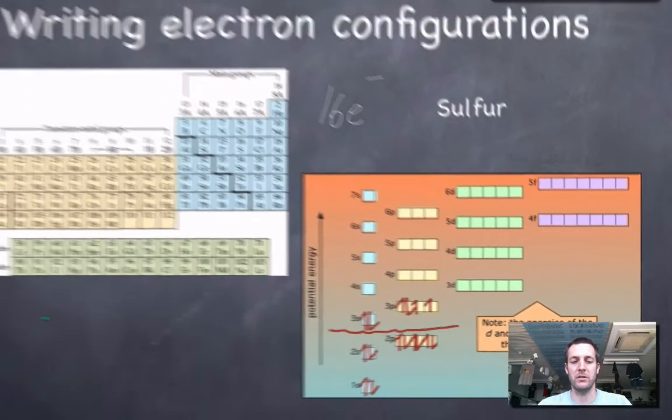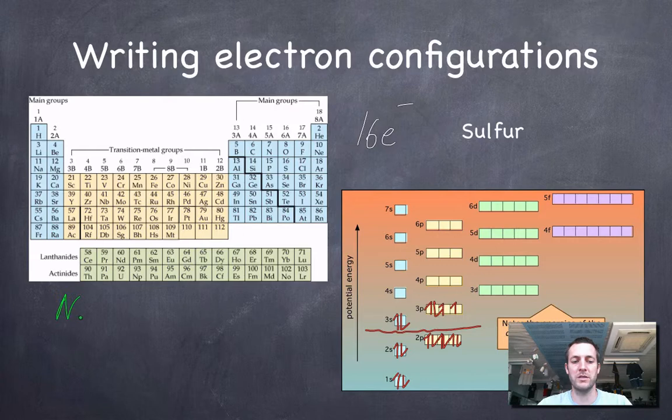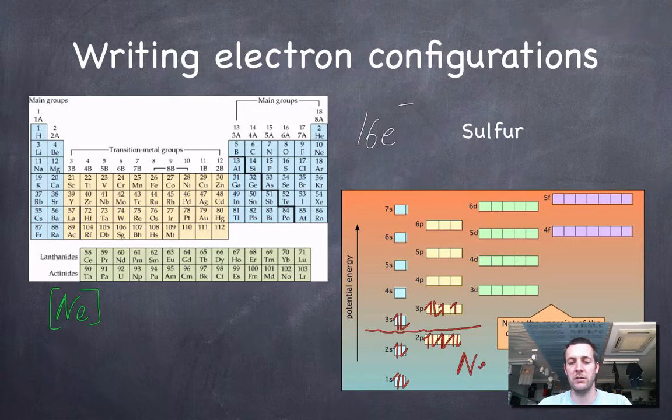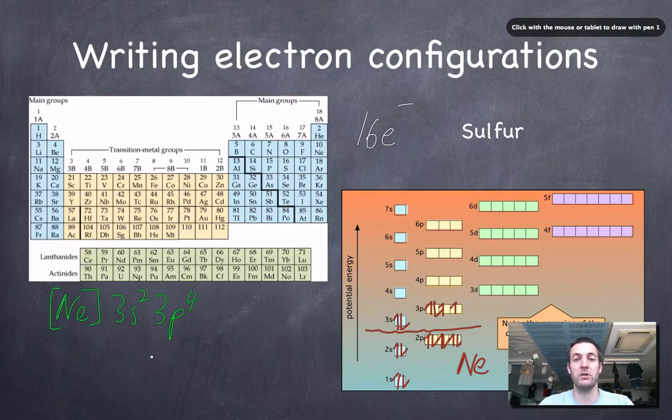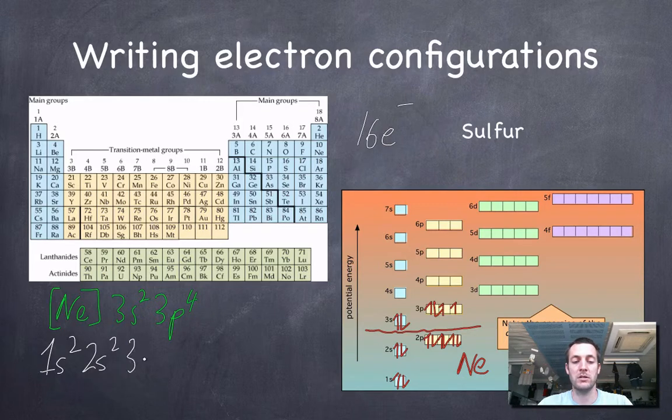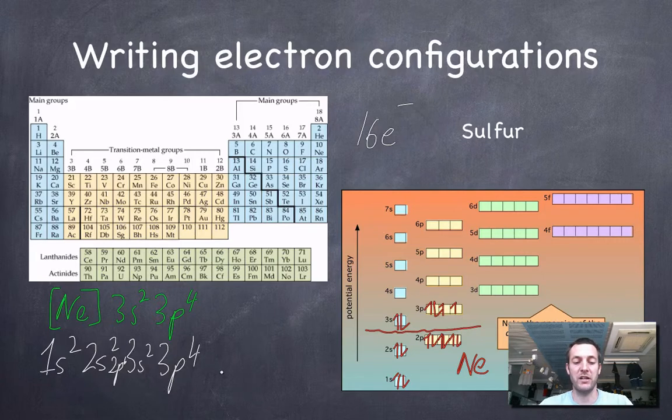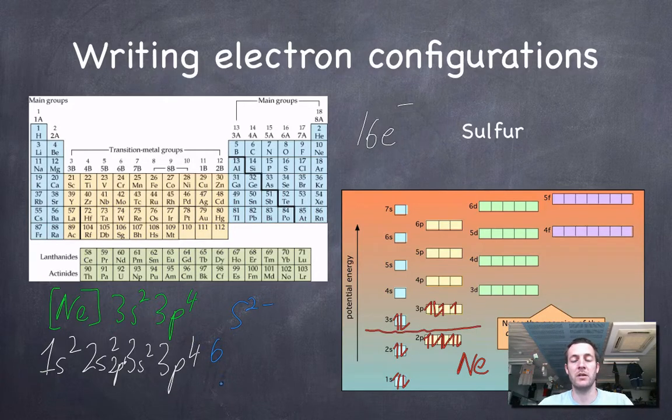Now we can see here that you've got the same electron configuration as neon up to here, but you've also got 3s2 and 3p4. But really and truly unless we've been told specifically in the question that we can use that shortcut, we ought to write this out as 1s2 2s2 2p6 3s2 and 3p4. And if we made a sulfide ion S2-, then that would turn into 3p6.